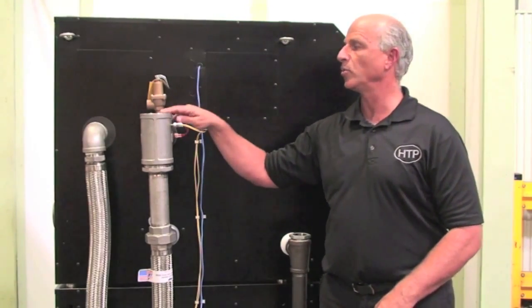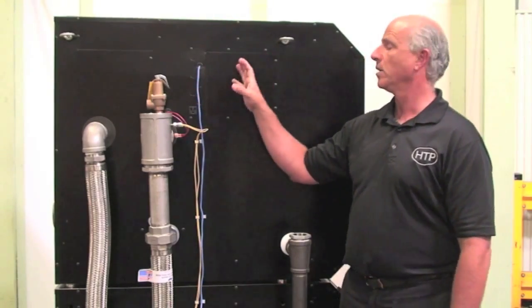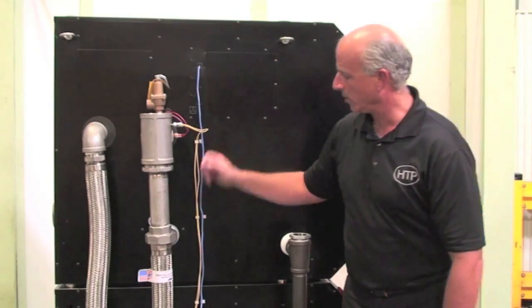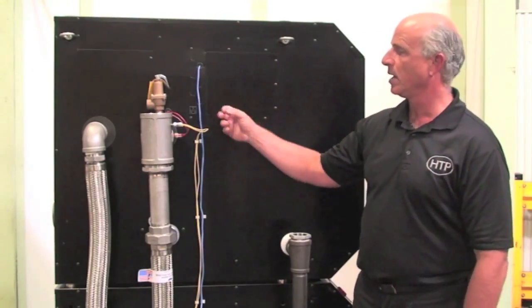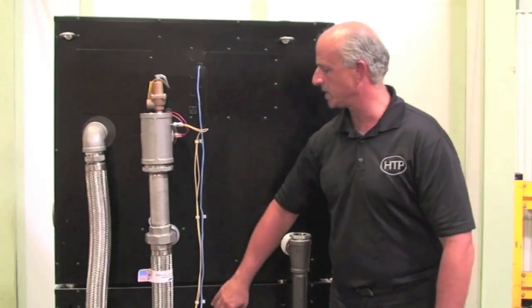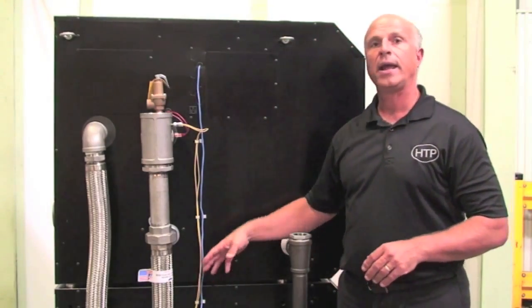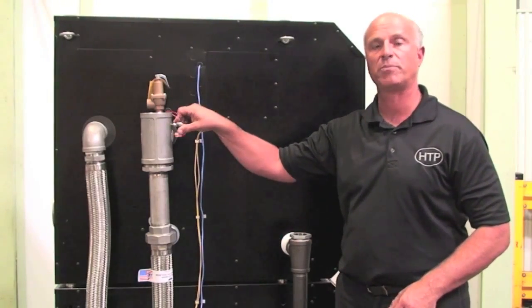This sensor will tell the master boiler, the main boiler, what to do. We have this communication cable, and the master will send a signal down to the follower if needed to come on and modulate to maintain a set point on this supply sensor.